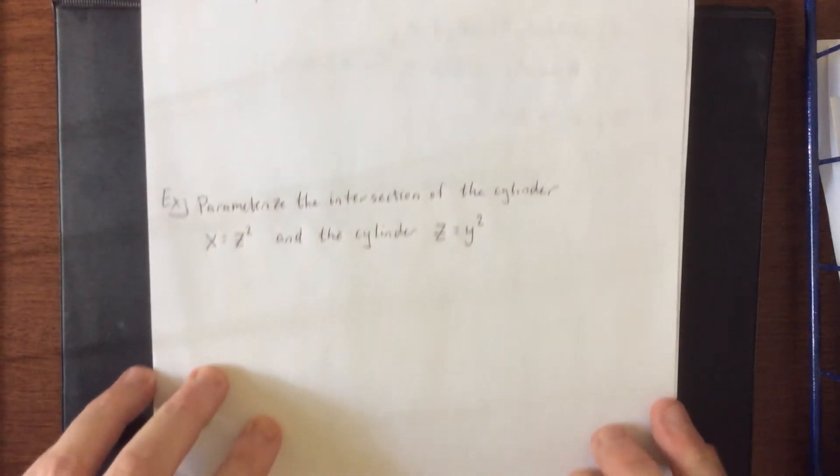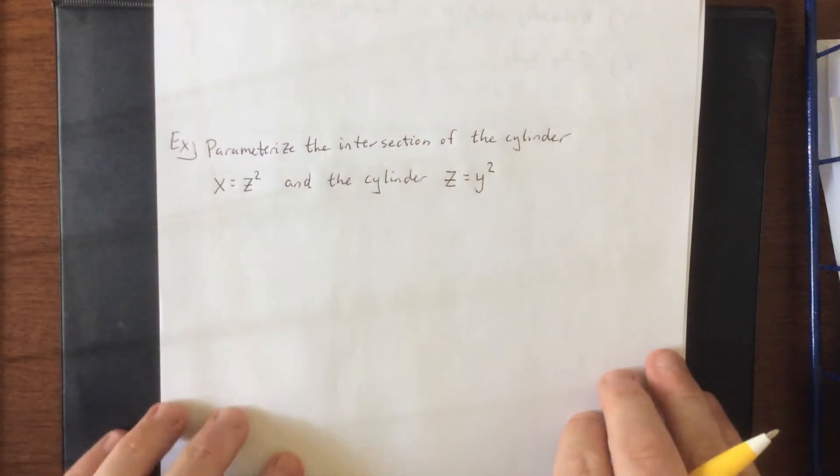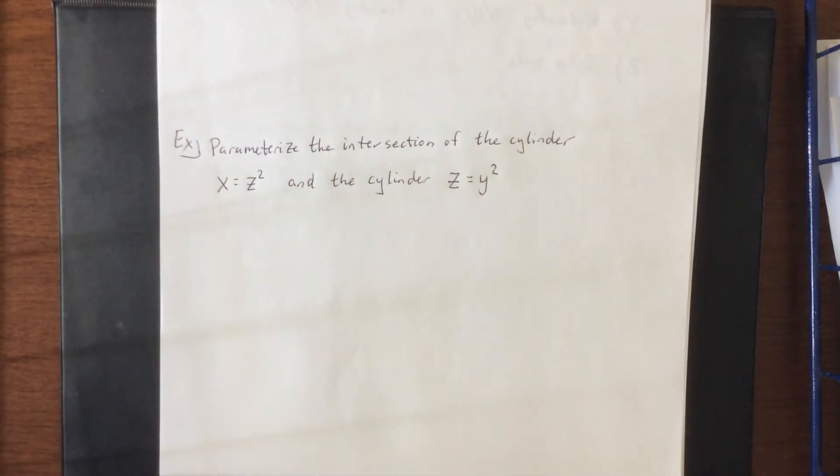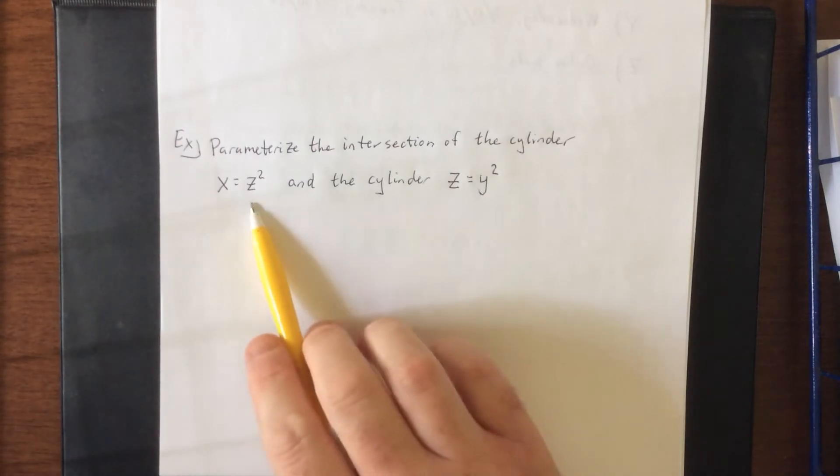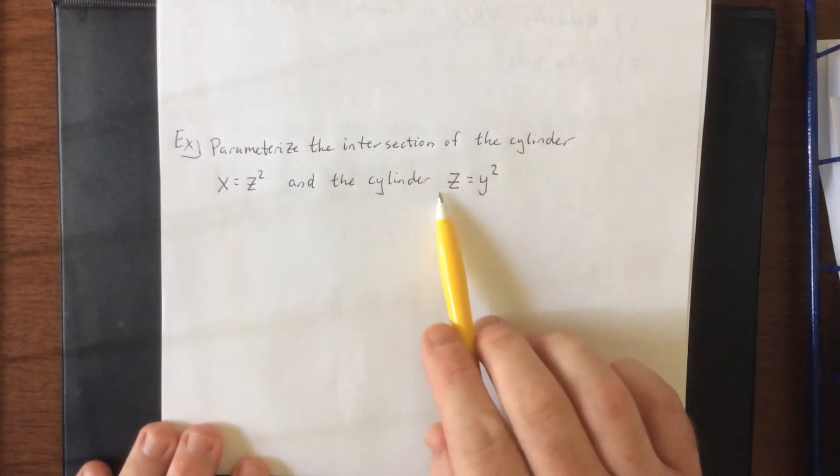So for our first example, I'd like to parameterize the intersection of a couple of cylinders. These are both parabolic cylinders. We have x equals z squared and we have the cylinder z equals y squared.